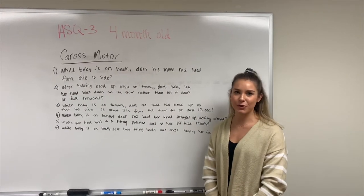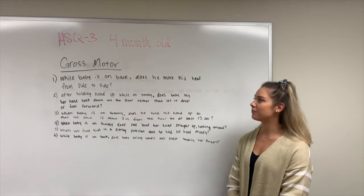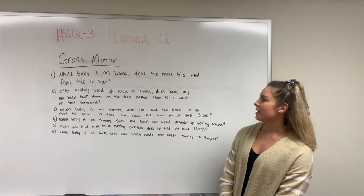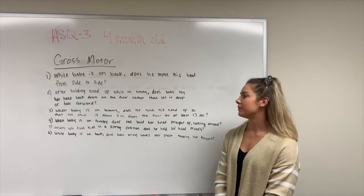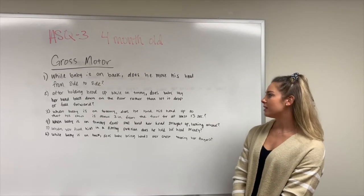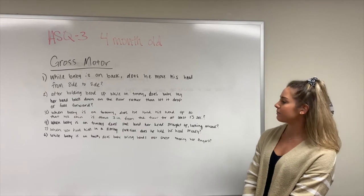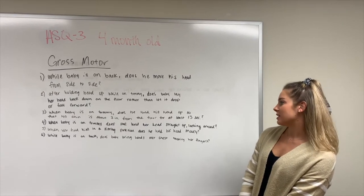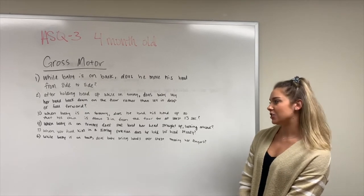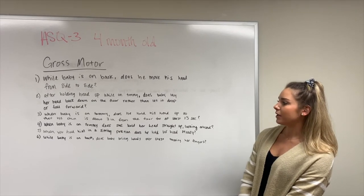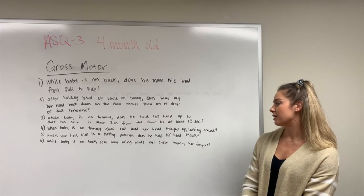The next section is gross motor skills. Questions to ask include: While the baby is on their back, does he move his head from side to side? After holding his head up while on his tummy, does the baby lay their head back down on the floor rather than letting it drop? When on their tummy, does he hold his head up so that his chin is about three inches from the floor for at least 15 seconds? Does she hold her head straight up, looking around? When held in a sitting position, does he hold his head steady? And while on their back, does the baby bring his hands over his chest, touching her fingers?